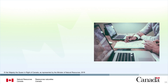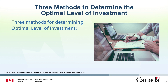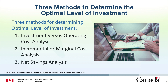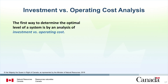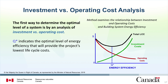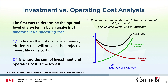Now that we know the initial purchase price may be a small part of total costs, let's look at three main ways to evaluate the optimum level of investment. These include investment versus operating cost analysis, incremental or marginal cost analysis, and net savings analysis. The first way is by analysis of investment versus operating cost. The x-axis shows a range of energy efficiency levels, increasing from left to right. The y-axis represents costs, including investment and OM&R costs. As the project's energy efficiency increases, operating costs decrease and investment costs increase. Point Q indicates the optimal level of energy efficiency that provides the lowest lifecycle costs — where the sum of investment and operating costs is the lowest.